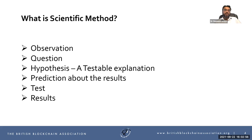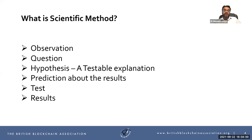Science builds and organizes knowledge in the form of testable explanations and makes predictions about how things work. The process of practicing science is called scientific method. You make an observation — for example, you are interested in supply chains and observe that the tracking of goods in traditional supply chains is slow and inefficient. The next step is you ask a question. The question could take different shapes or forms, but it's important to be very precise. For example: can blockchains help reduce the time it takes for goods to be transferred from one end of the supply chain to another?